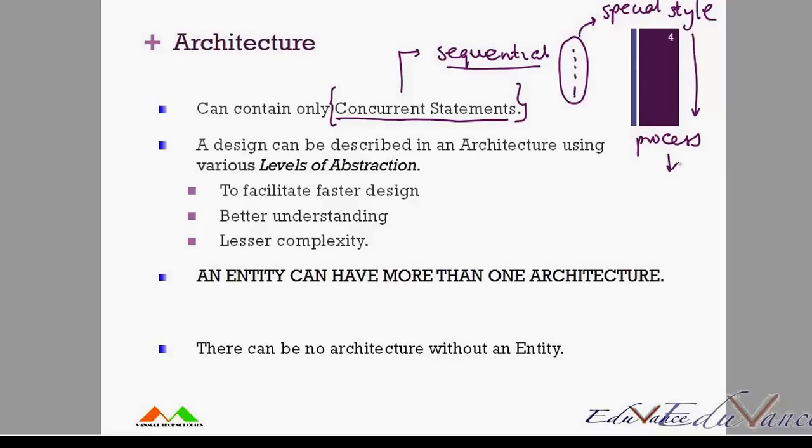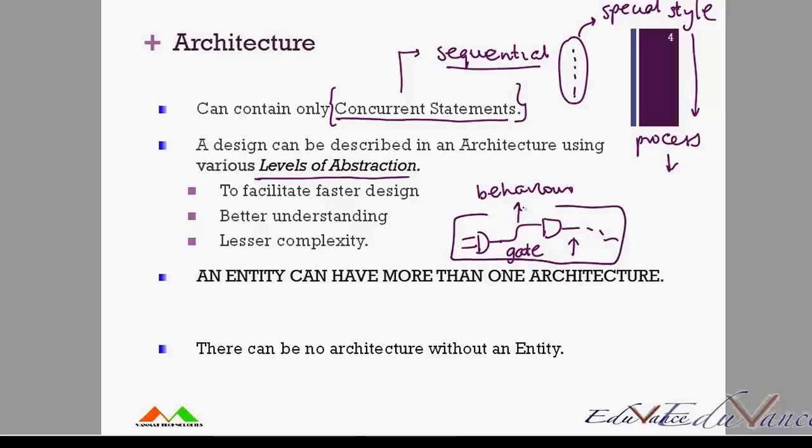Now the architecture can be specified using various levels of abstraction. What do I mean by various levels of abstraction is you can decide to show or specify the architecture at a gate level. If you have lots of gates connected to each other, you can describe it at gate level. Or you can decide to describe it in terms of a behavior, that if you know how this complete circuit will function in terms of input and output, you can specify it in terms of behavior. So you can decide at what level, at what level of detail you would like to specify, whether it's at the behavioral level or at the gate level.